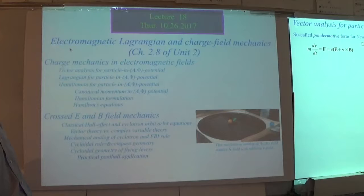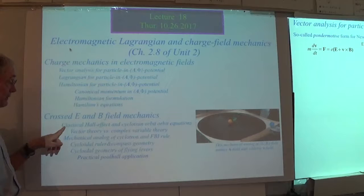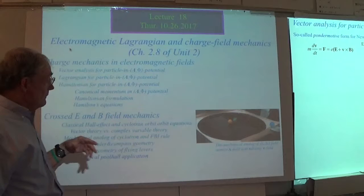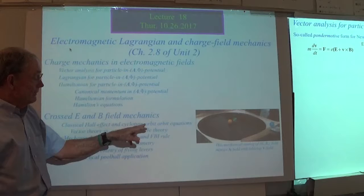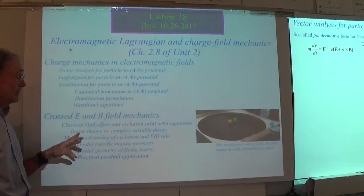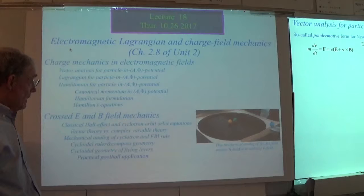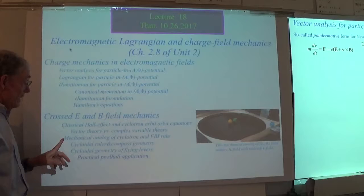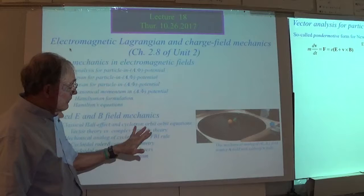Once we've got that out of the way with Hamilton's equations, we're going to check Hamilton's equations against the fundamental ones written on the first slide. Then I want to take a look at the classical Hall effect and the cyclotron orbit equations. What I'm going to show you is if you just make a complex variable out of all your classical variables, it's really easy to see what that equation is doing.